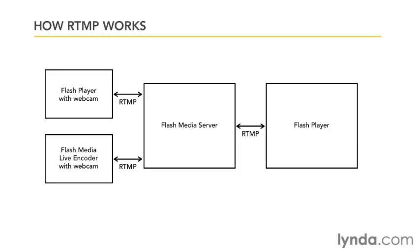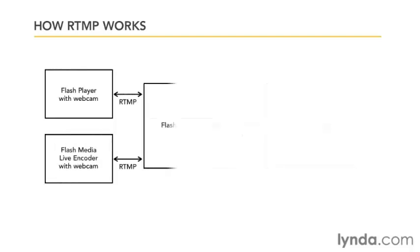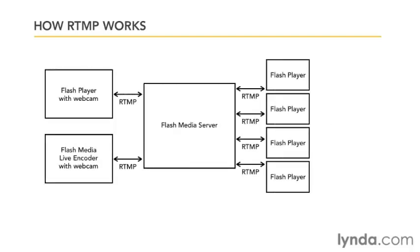The same stream can be sent out to any number of clients who request it, provided the FMS server and its network have the bandwidth to deliver all of the simultaneous streams. Additional FMS servers can be chained together to increase capacity and allow for very large events. Later in this course, we'll get our hands on the VOD and live services on FMS that let us quickly start streaming both live and on-demand video over RTMP to Flash Player. Next, let's look at HTTP Dynamic Streaming, or HDS.